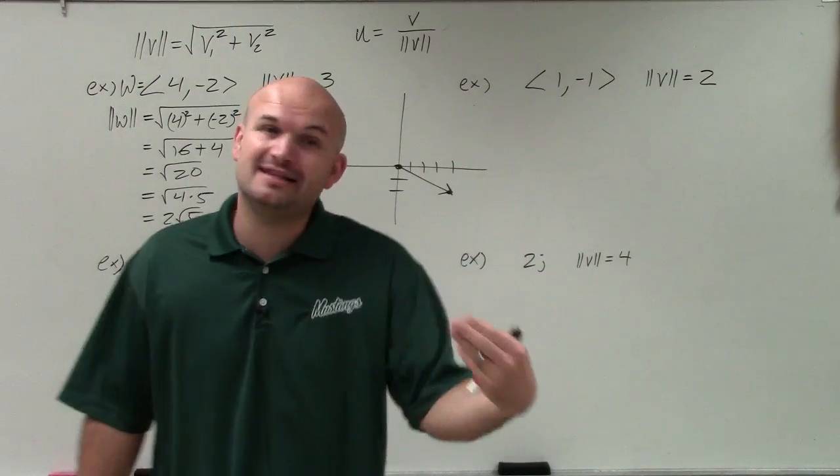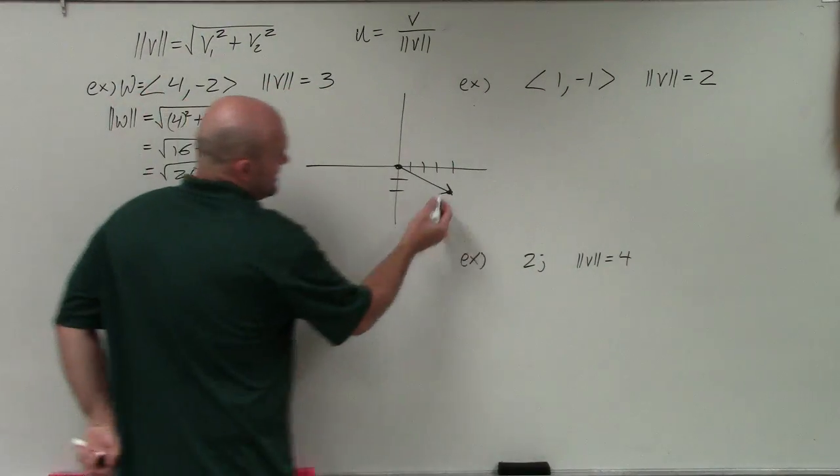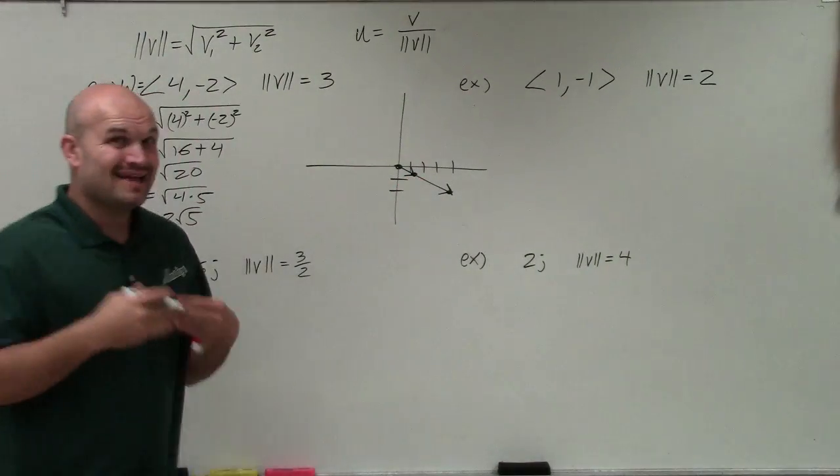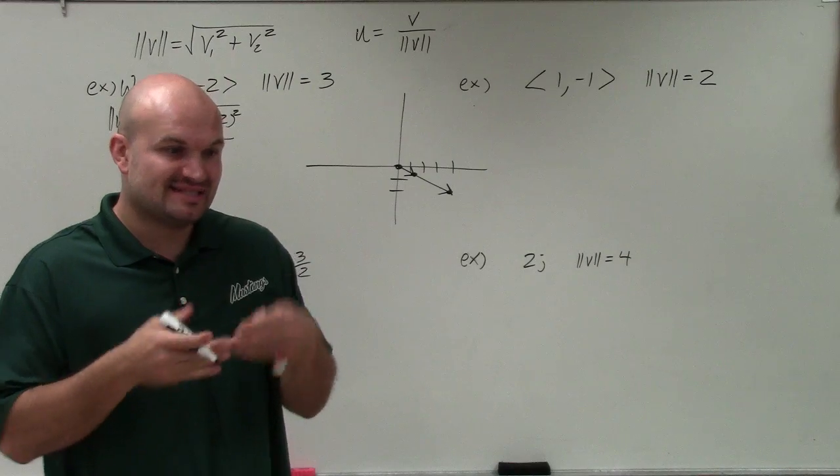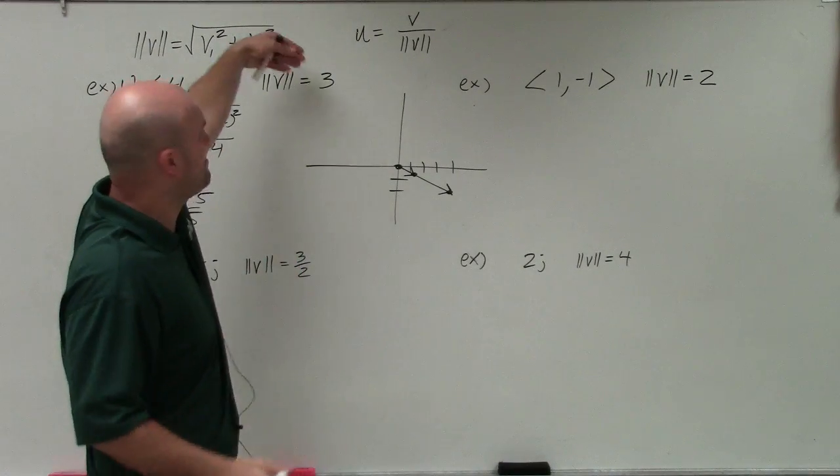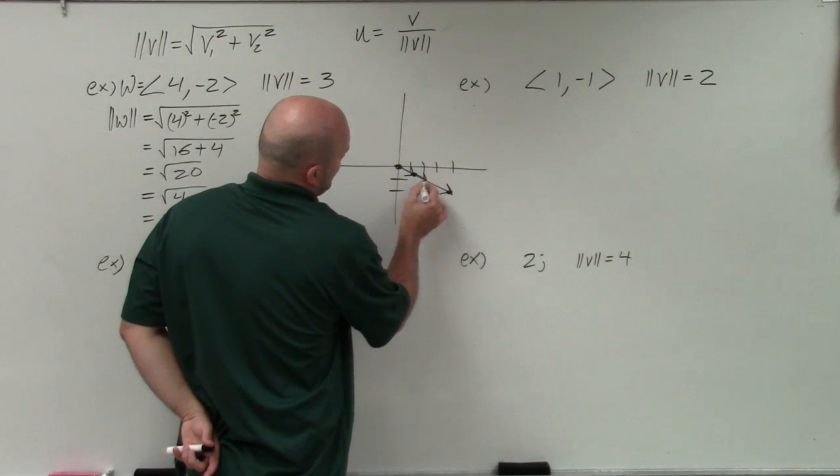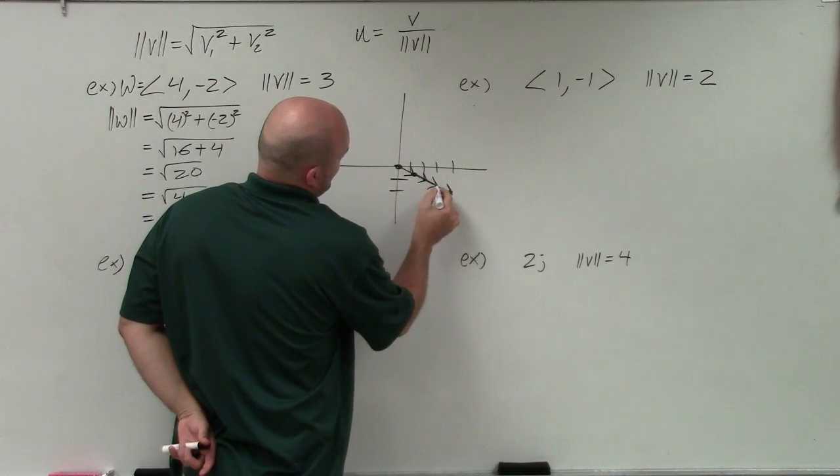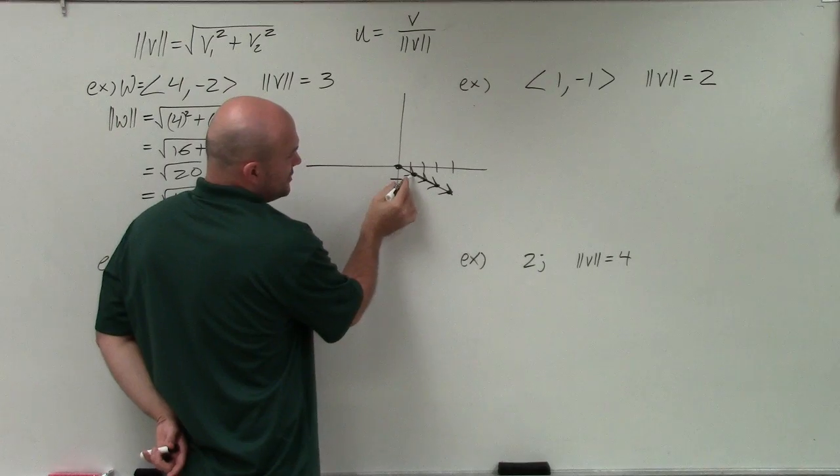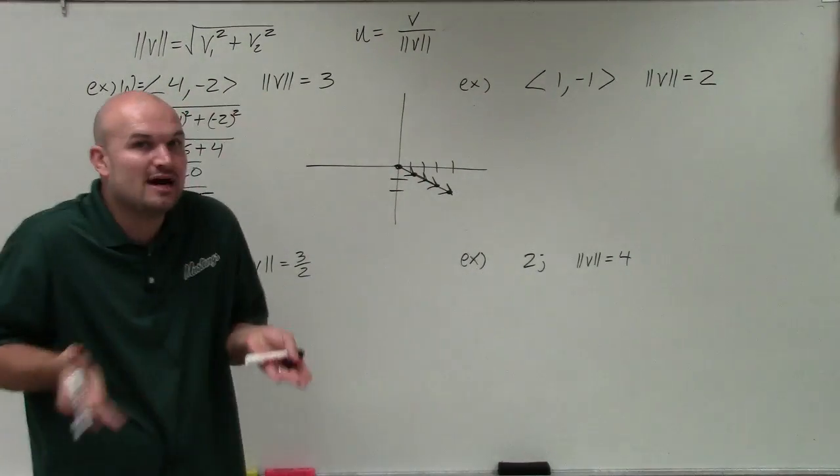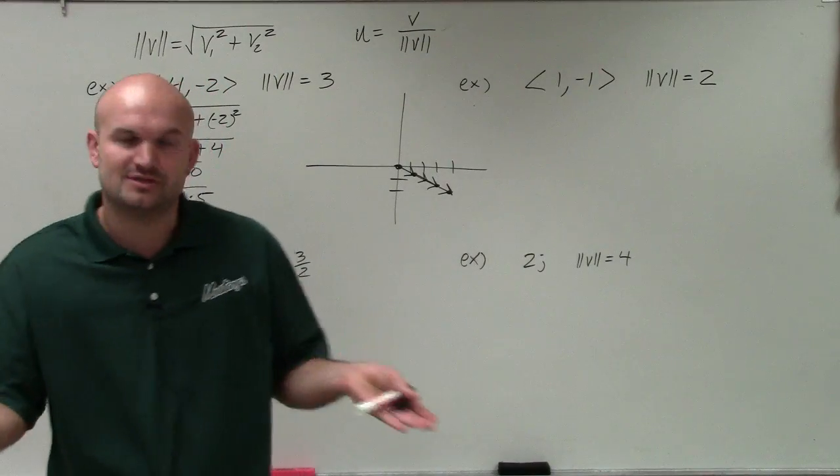So what we need to do is find the unit vector, because what's going to happen is if we find the unit vector, that means that vector has a magnitude of 1. Then all we need to do is take that unit vector and multiply it by its magnitude to get it to have a magnitude of 3.